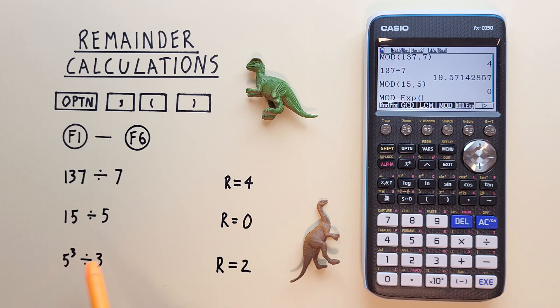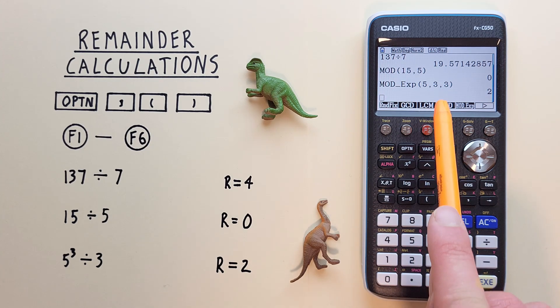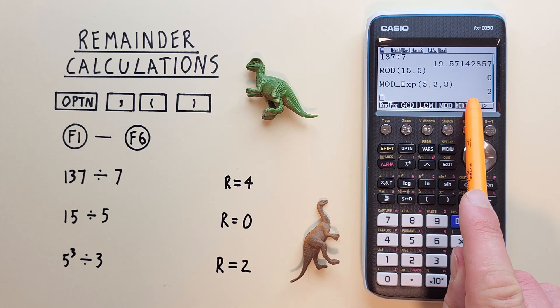And then we enter the 5, and then the comma, and then the exponent which is 3, and then the comma again, and then the 3. Close our bracket and hit EXE. And we see we get a remainder or modulus of 2.